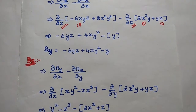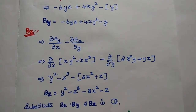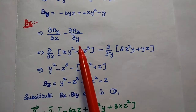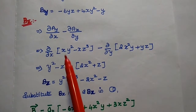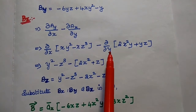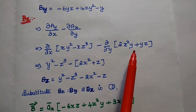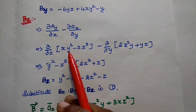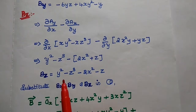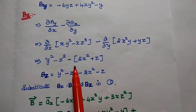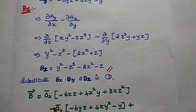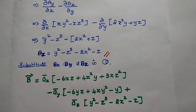The last term is Bz, the z component of magnetic flux density. For that we take ∂Ay/∂x − ∂Ax/∂y. Differentiating Ay = xy² − xz³ with respect to x gives y² − z³. Differentiating Ax = 2x²y + yz with respect to y gives 2x² + z. Therefore Bz = y² − z³ − 2x² − z. Next we substitute all three components into the first equation.